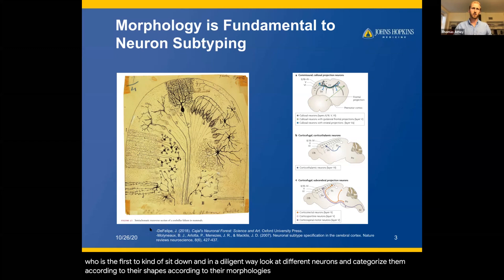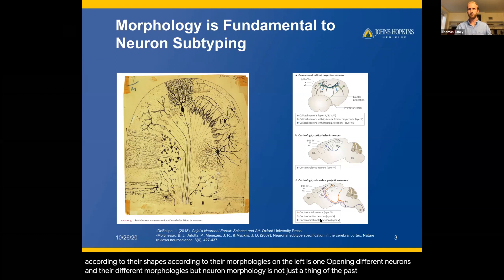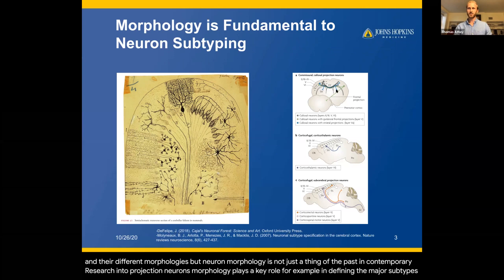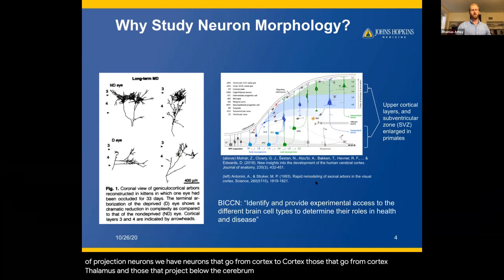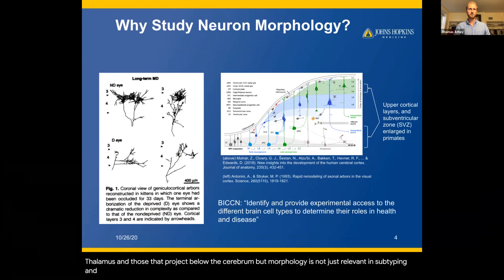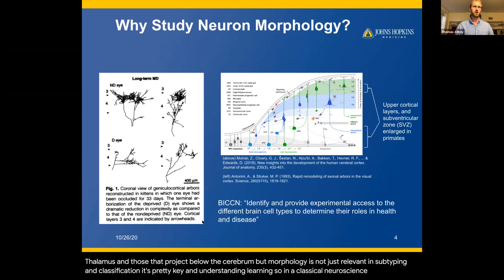On the left is one of his beautiful drawings exhibiting different neurons and their different morphologies. But neuron morphology is not just a thing of the past. In contemporary research into projection neurons, morphology plays a key role — for example, in defining the major subtypes of projection neurons. And morphology is not just relevant in subtyping and classification; it's pretty key in understanding learning.